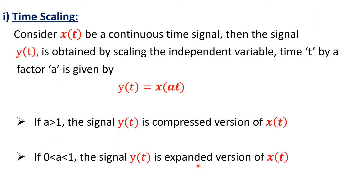Let's consider the first operation, that is time scaling. Consider x(t) to be a continuous time signal. Then the signal y(t) is obtained by scaling the independent variable time t by a factor a, and is given by y(t) = x(a·t). Here a is known as the scaling factor. So the scaling factor a is multiplied with t, and x(at) gives the output signal y(t). So here y(t) is a scaled version of x(t).